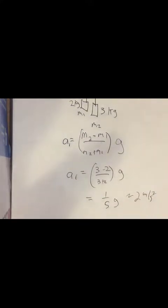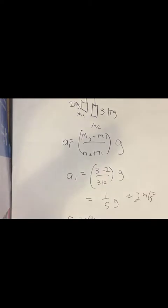So that would be the acceleration of mass 1, and clearly the acceleration of mass 2 would be the negative of that. That's the Atwood machine.